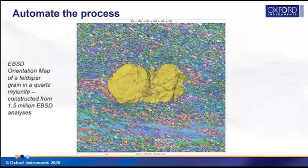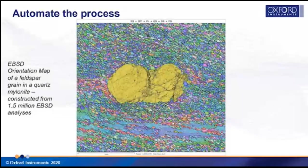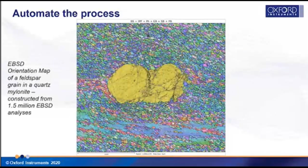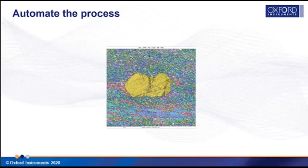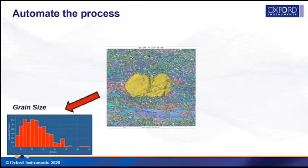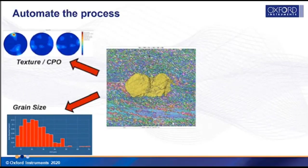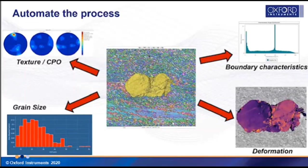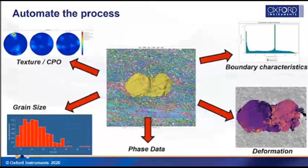The automation is a great strength of EBSD. An orientation map where colors correspond to crystallographic orientation can show a large feldspar grain colored yellow surrounded by fine-grained quartz in a deformed quartz mylonite zone. This map was reconstructed from about one and a half million EBSD analyses in 20 to 25 minutes. From that data we can extract grain size and distributions, texture and crystallographic preferred orientation, boundary information, deformation information, and phase distributions.